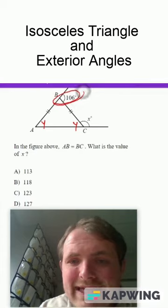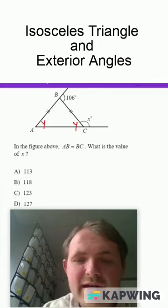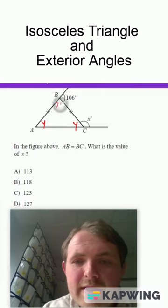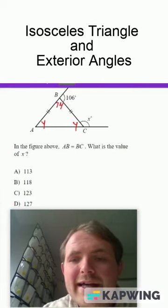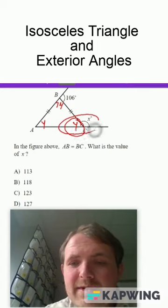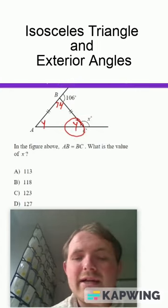This right here forms a linear pair between that top angle and the 106 there, forcing that top angle to be 74 degrees. Now, if I can find one of these y's, then I can do that same concept, making that x plus y equaling 180.